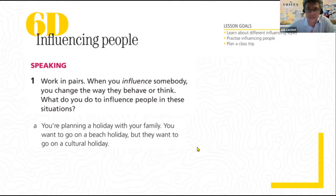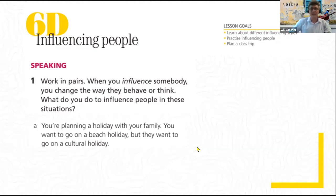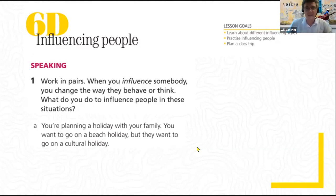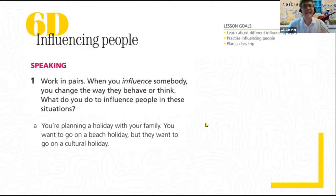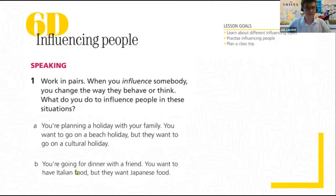Ellen would point out the advantages of going to the beach. Blankita would talk about the weather — picking somewhere with perfect weather, like Thailand. Nancy would show pictures of past experience — a beautiful beach photo — and say 'wouldn't you want to go there?' So these are some techniques we can use.